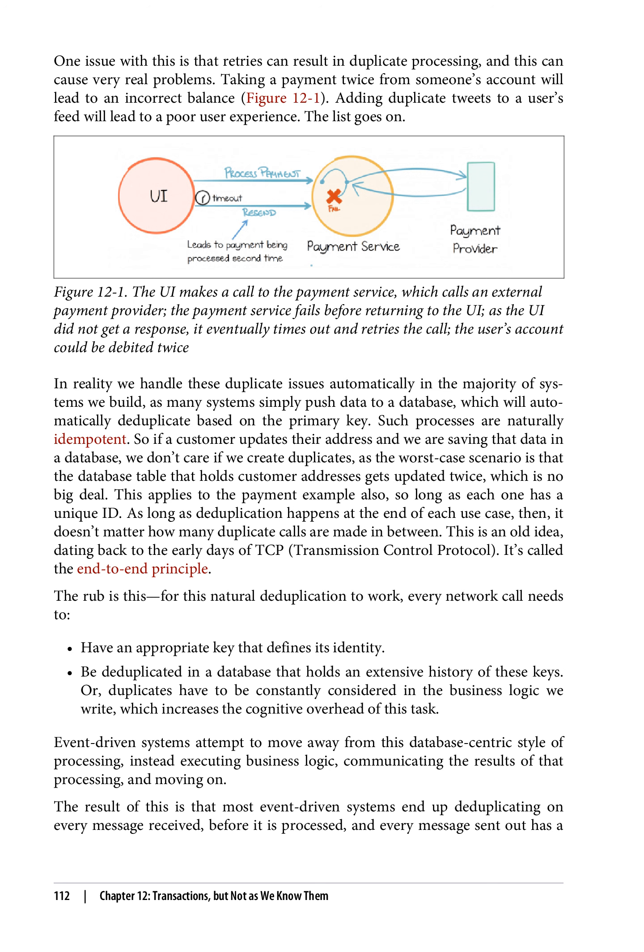As long as deduplication happens at the end of each use case, it doesn't matter how many duplicate calls are made in between. This is an old idea, dating back to the early days of TCP — transmission control protocol. It's called the end-to-end principle. The rub is this: for this natural deduplication to work, every network call needs to have an appropriate key that defines its identity, be deduplicated in a database that holds an extensive history of these keys, or duplicates have to be constantly considered in the business logic we write, which increases the cognitive overhead of this task.